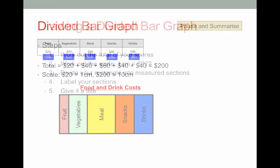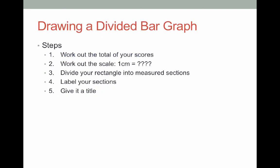Now that you've paused and summarized there is a little bit more. Some tips on how to draw it. So these are some steps. Step one work out the total of all your scores. Step two work out your scale what one centimeter will represent. Step three divide your rectangle into measured sections. Step four label your sections. We did that as we went. And five give it a title. Please pause and summarize this information.